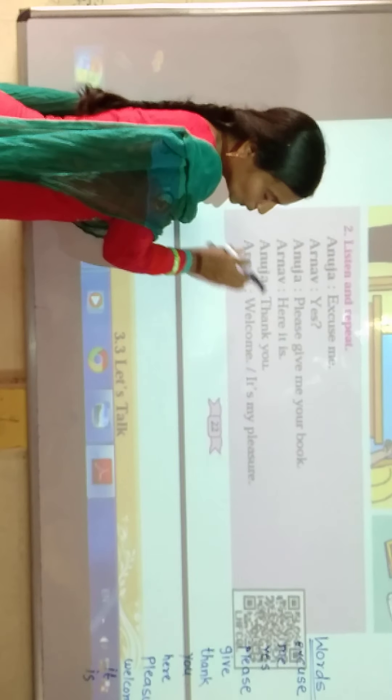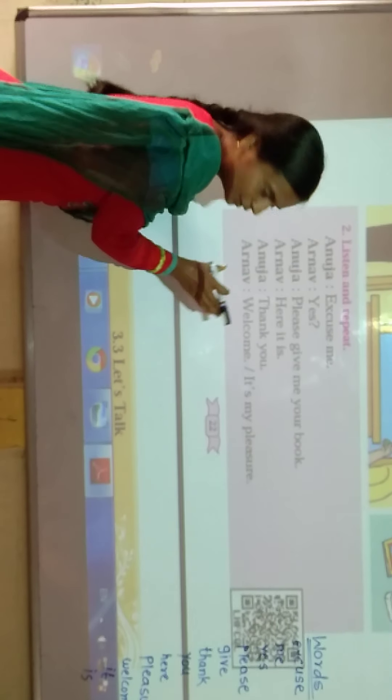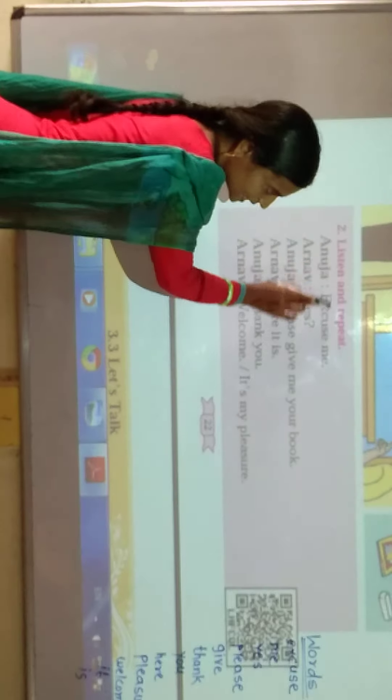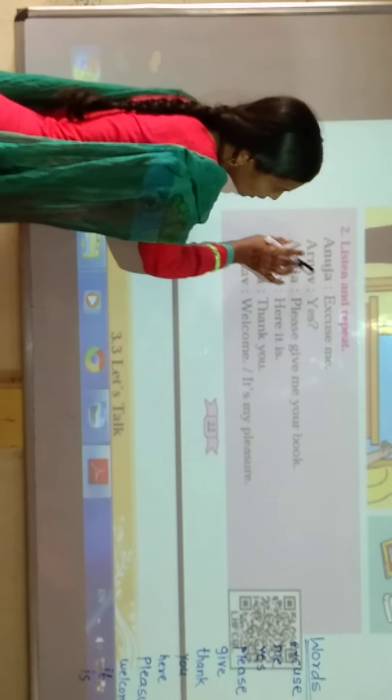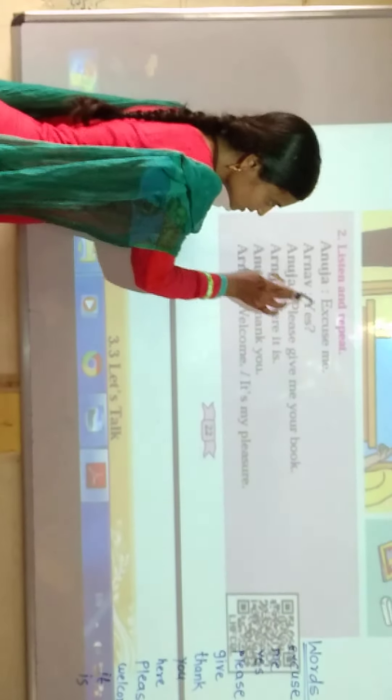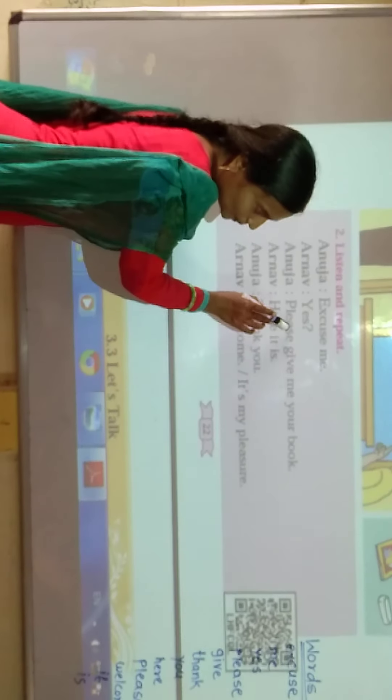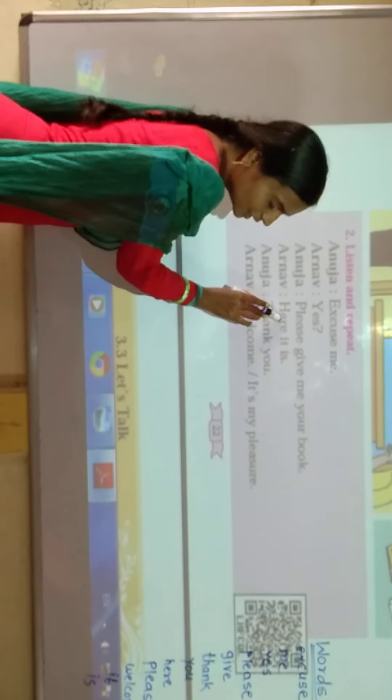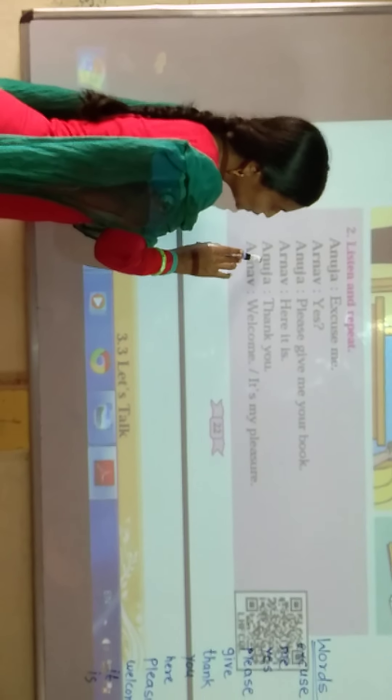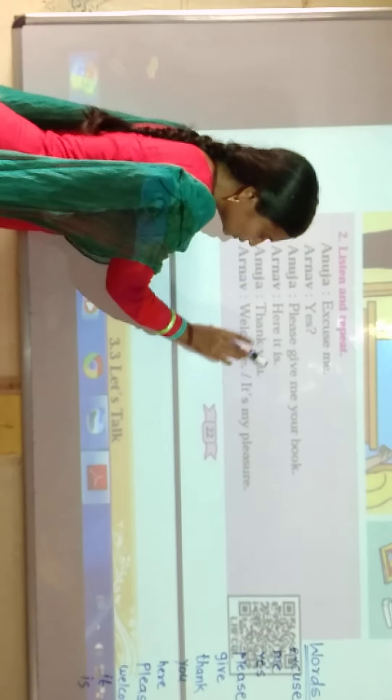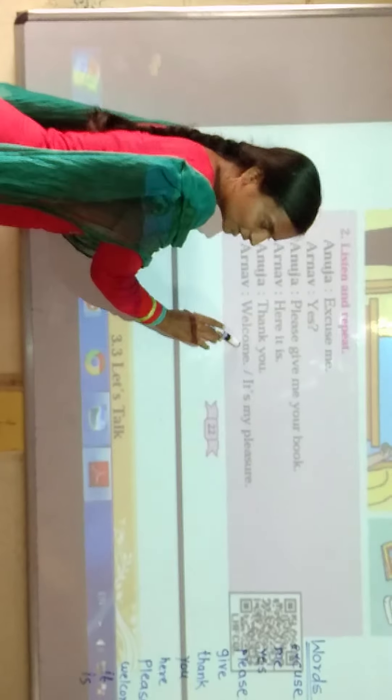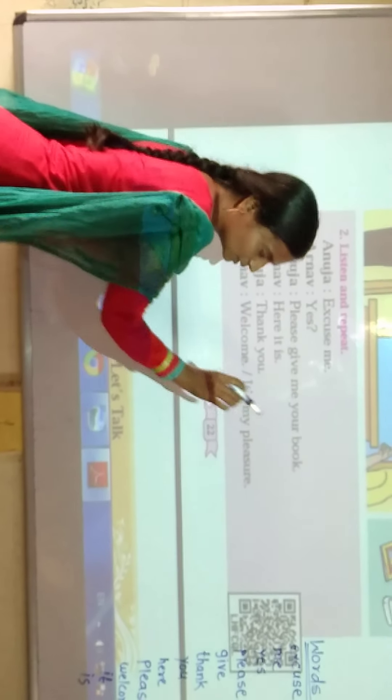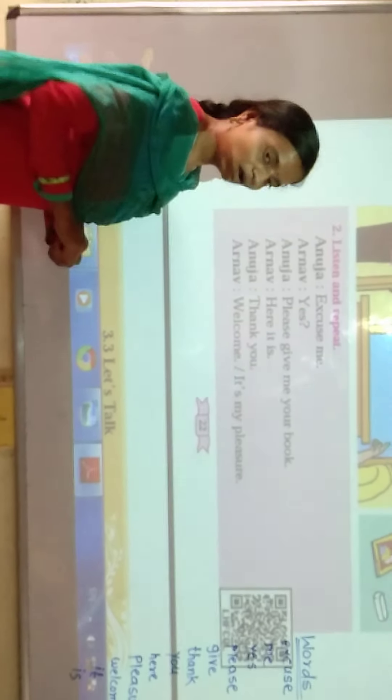So children, this is the conversation in between two friends. So children, look here and repeat after me. Anuja says, Excuse me. Arnau says, Yes. Anuja says, Please give me your book. Arnau says, Here it is. Anuja says, Thank you. Arnau says, Welcome. It's my pleasure. So children, this is the conversation.